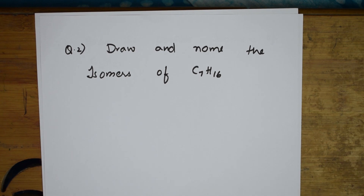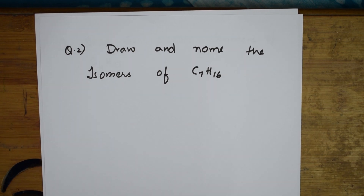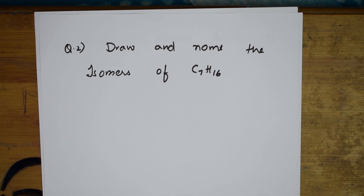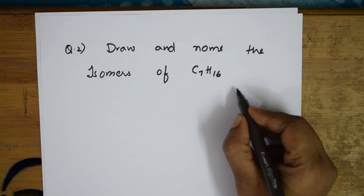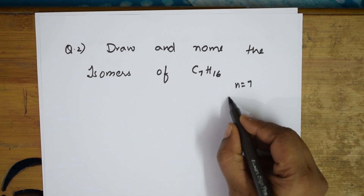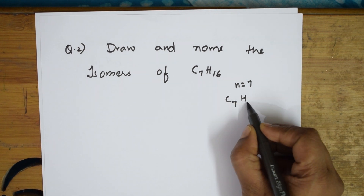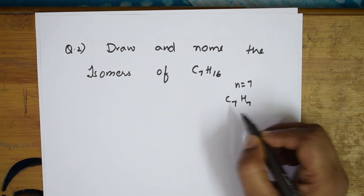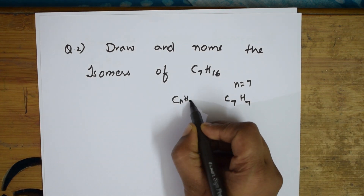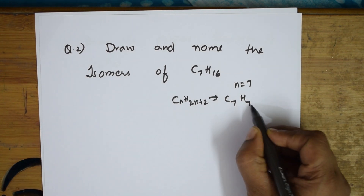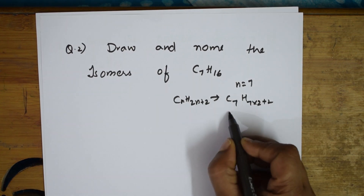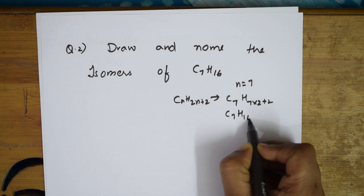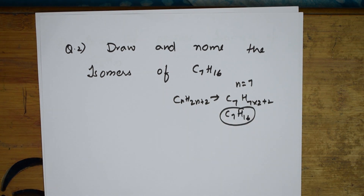They've given: draw and name the isomers of C7H16. Now what is C7? C7 is nothing but heptane. Here n is equal to 7, and substituting into the formula CnH2n+2 gives C7H16. So this is an alkane.